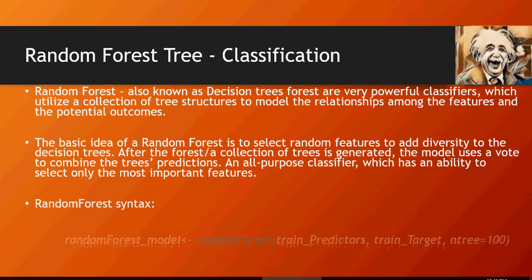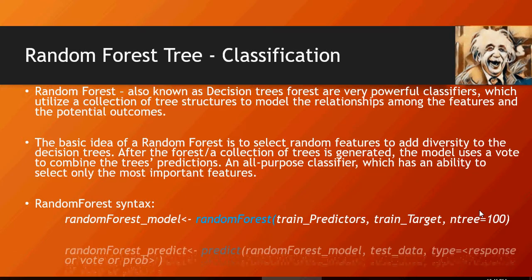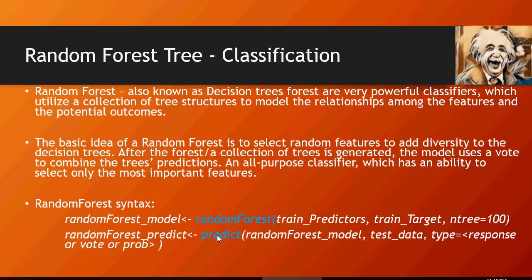This is the syntax. So to create a model, you would do randomForest. Again, this is a keyword. And train predictors, train target. And this is the number of trees you want it to create. And this is predict. Again, predict is the keyword here. The model, the test data, and the type. And this type decides whether it's going to be a response or a vote or a probability once those number of trees have been generated.